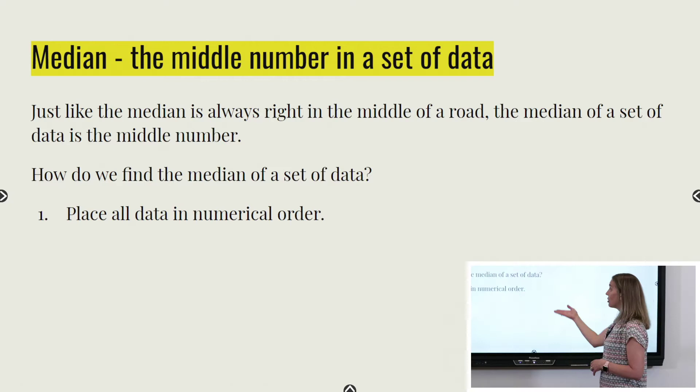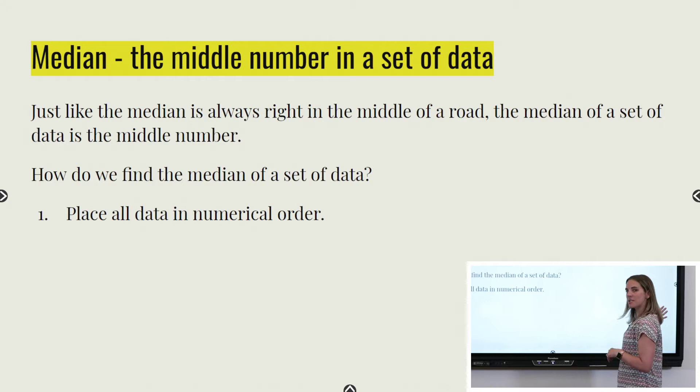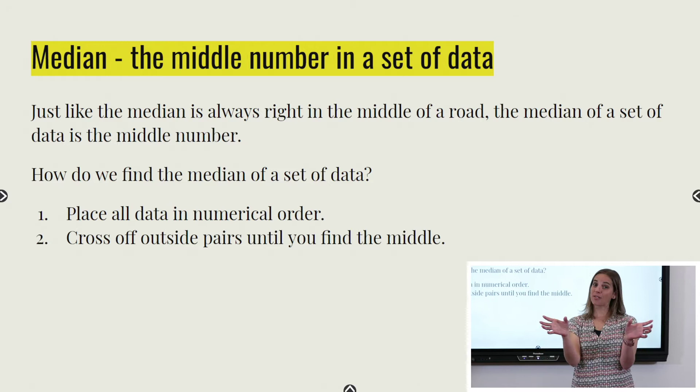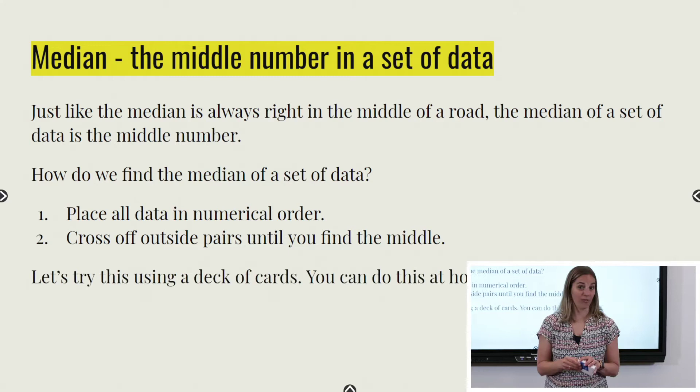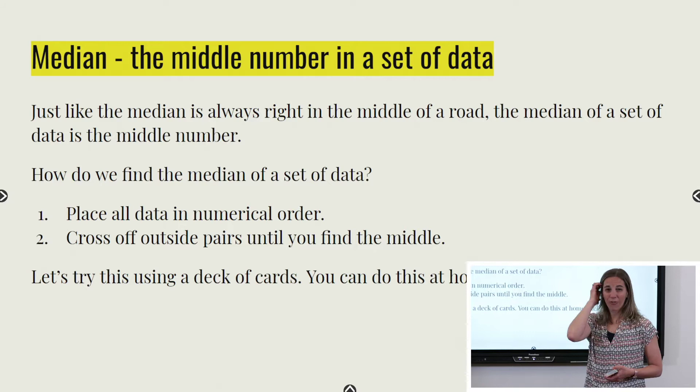But then the next step is a little different. You're going to start on the outside and cross off your outside pairs until you find the one number in the middle. We're going to do this using a deck of cards — you can do this at home. It's super simple.